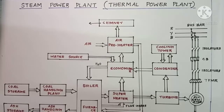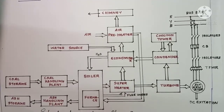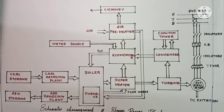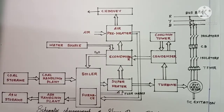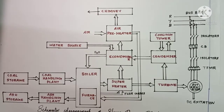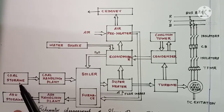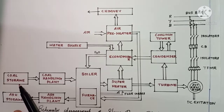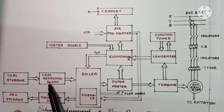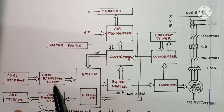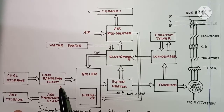You can see here the schematic arrangements for a steam power plant, in which coal or fuels are the basic requirements for the production of electrical energy. From the coal storage regions, the coal is directly fed into the coal handling plant.